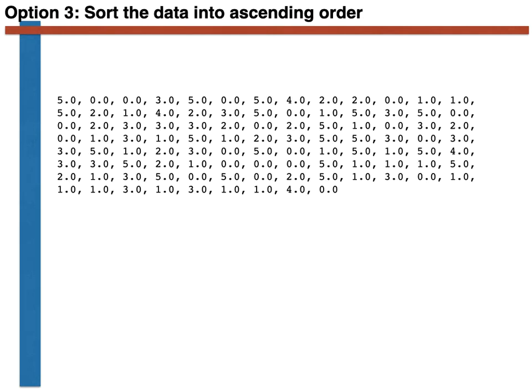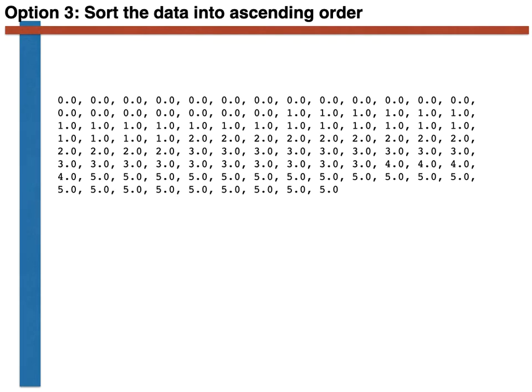As was discussed in the previous video, if we are given a data set such as the one shown here, we can always sort the data into ascending order in order to make sense of it. As you can see, in this sorted list, each pair of adjacent results, Xi and Xi plus 1, are either the same or Xi plus 1 is greater than Xi.